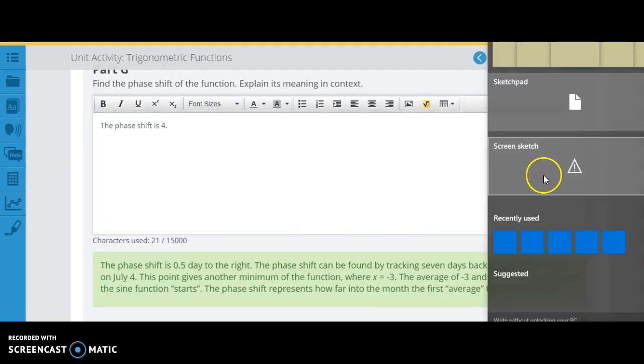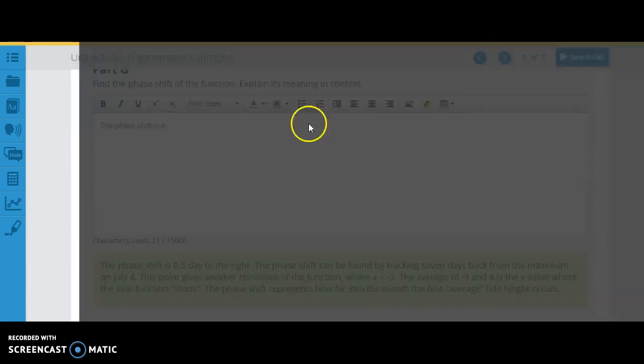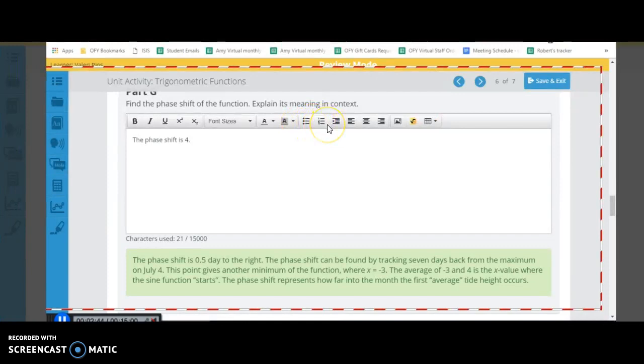For the phase shift here, let's go ahead and use that. Okay. So let me show you what this is going to look like. So we have our graph here. So here's July 4th. Here's July 11th. We know that this is going to be 7 days in between here, right?